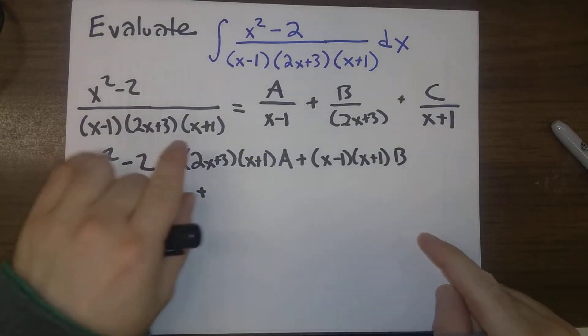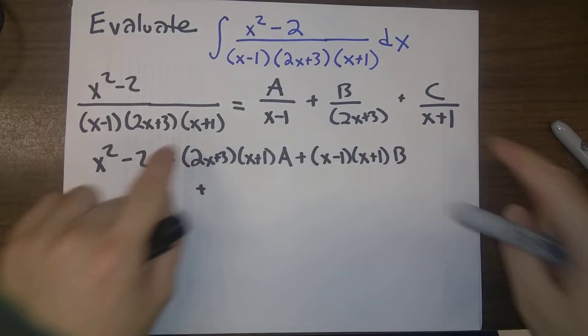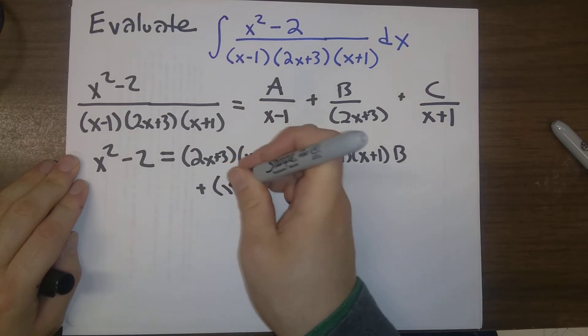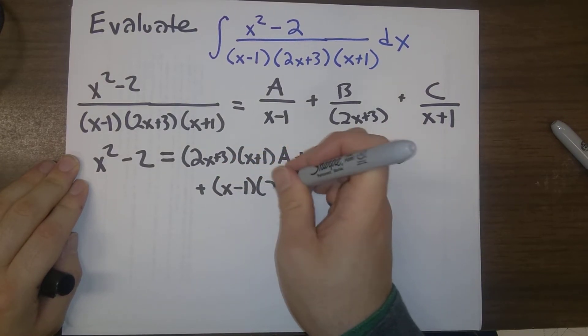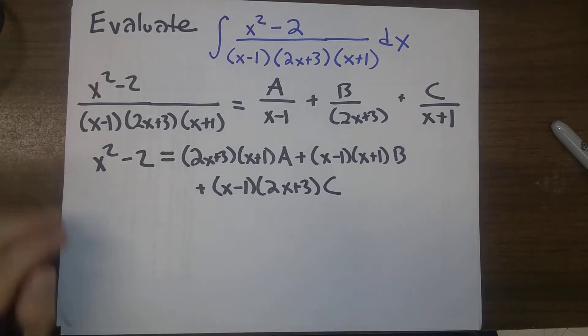And then this times this, the x plus 1s will cancel. So x minus 1 times 2x plus 3 times C.